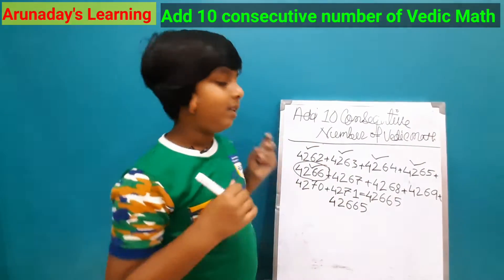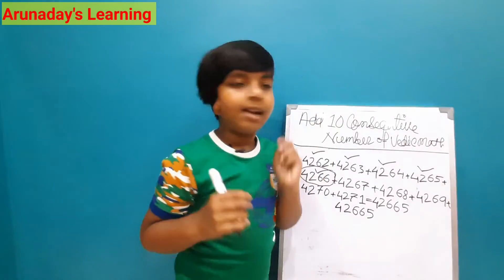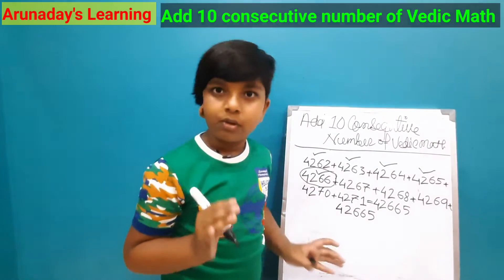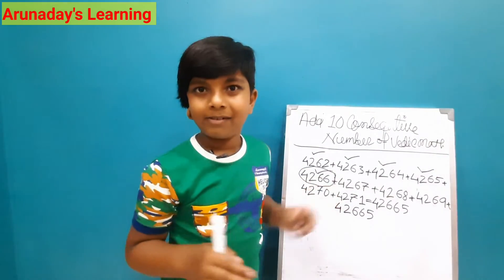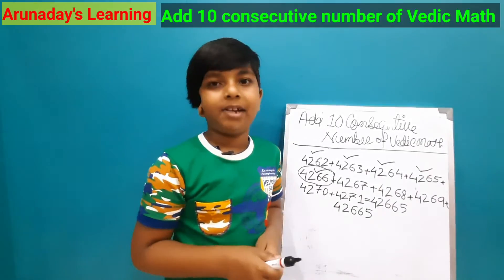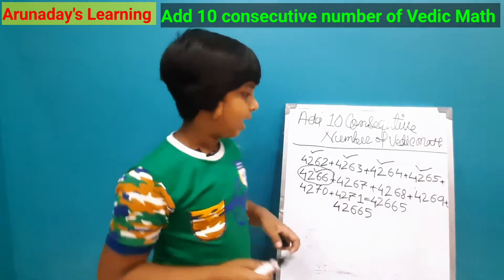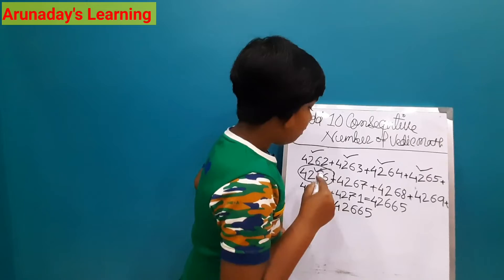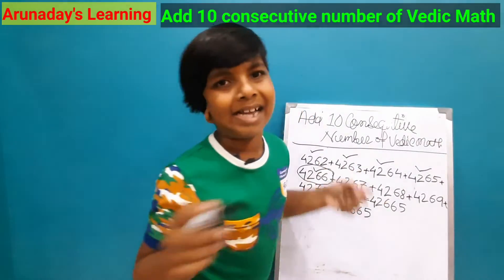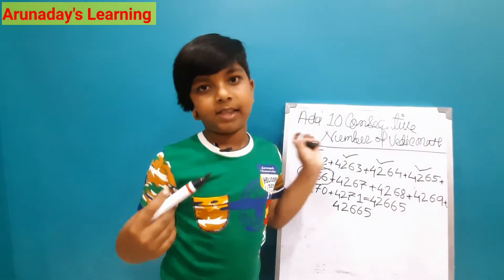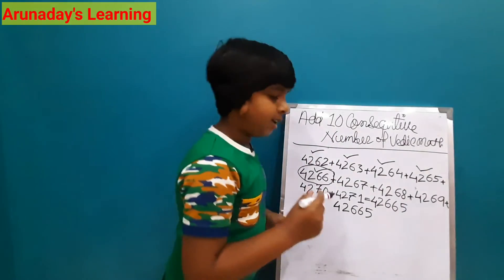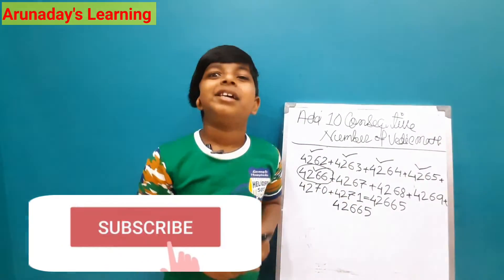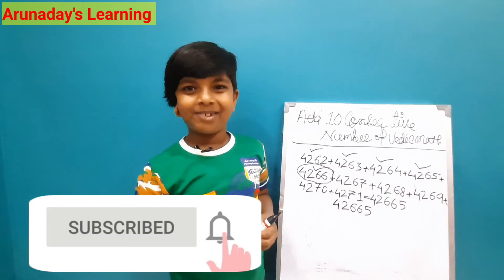We can do this with any digit using only 10 consecutive numbers in Vedic Math — only using this 5-step process. Not with other counts. For example, if the numbers were 4263 or 4271, that would not work. Only properly arranged consecutive 10 numbers will give this result. I hope you understand this video. Please like, subscribe, and share with your friends and family.